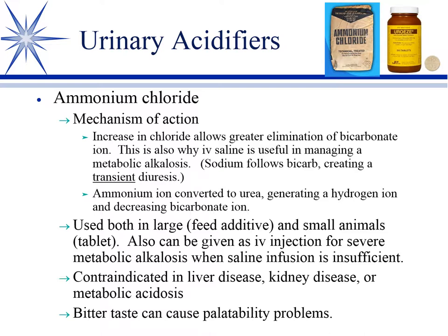Ammonium chloride is used a lot in large animal medicine as a feed additive but also in small animals. It is listed as a legally marketed unapproved drug. Because it must be converted by the liver, avoid use in liver disease or kidney disease, or it will worsen metabolic acidosis. One drawback is that it's slightly bitter, so palatability can sometimes be a problem, particularly in large animals.